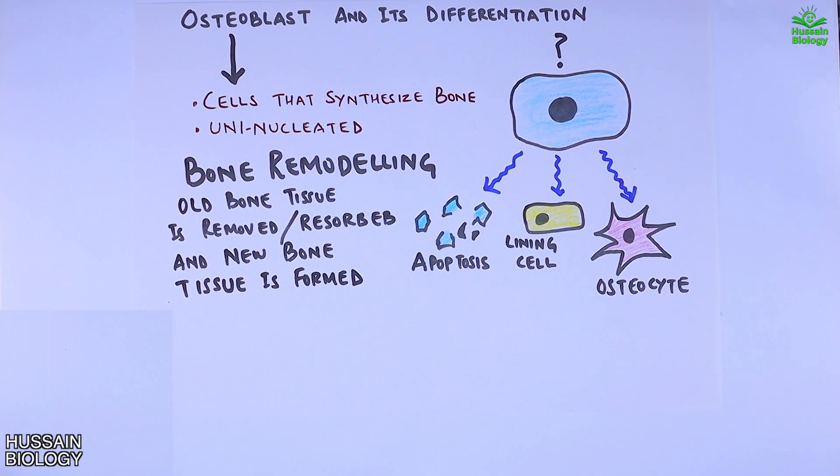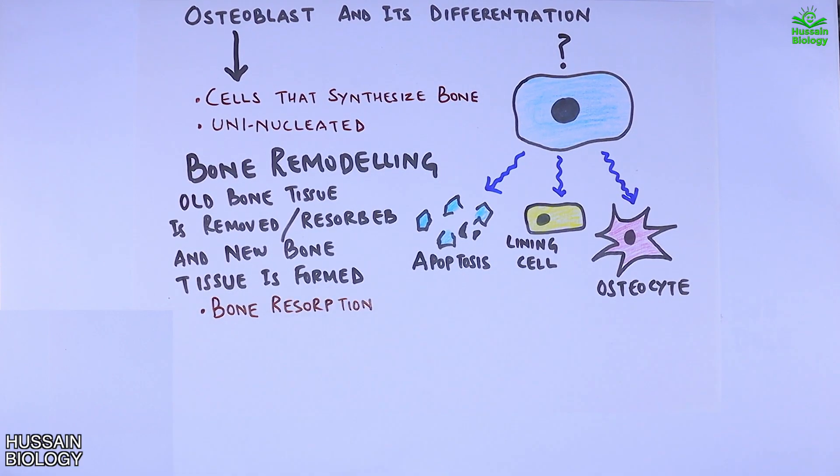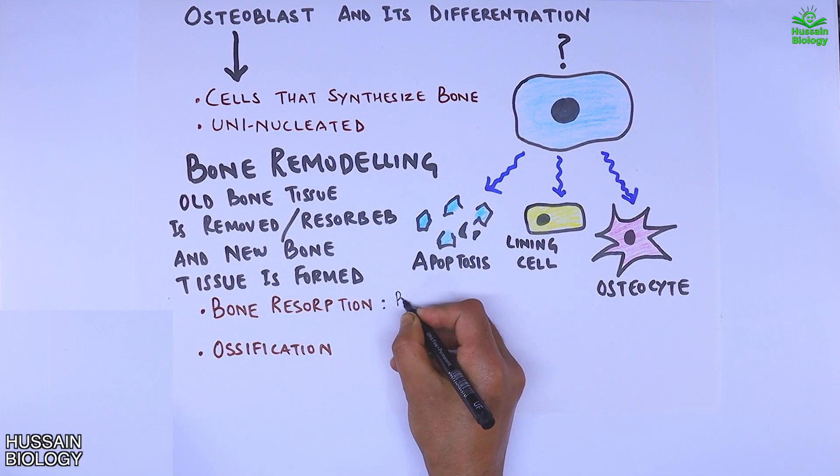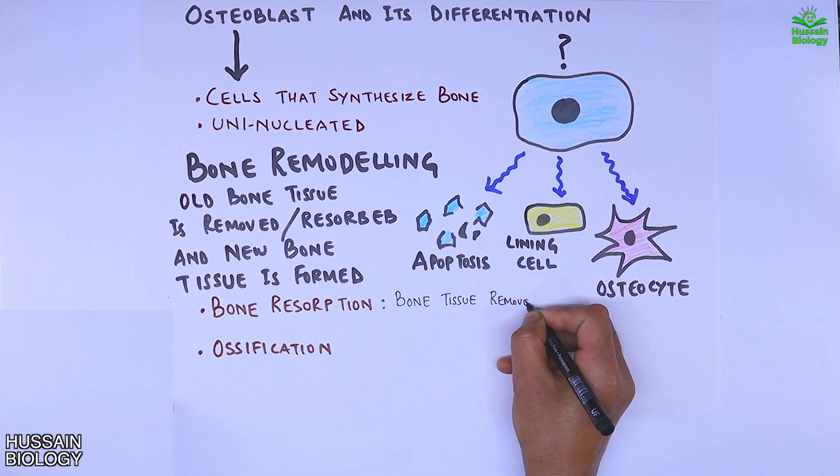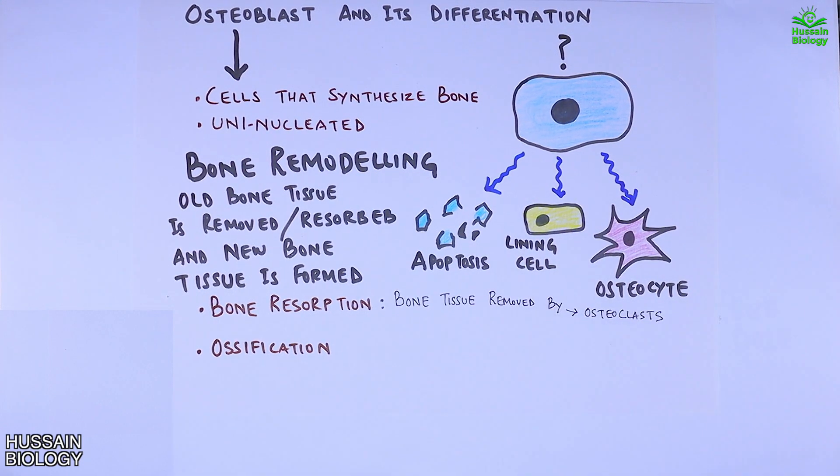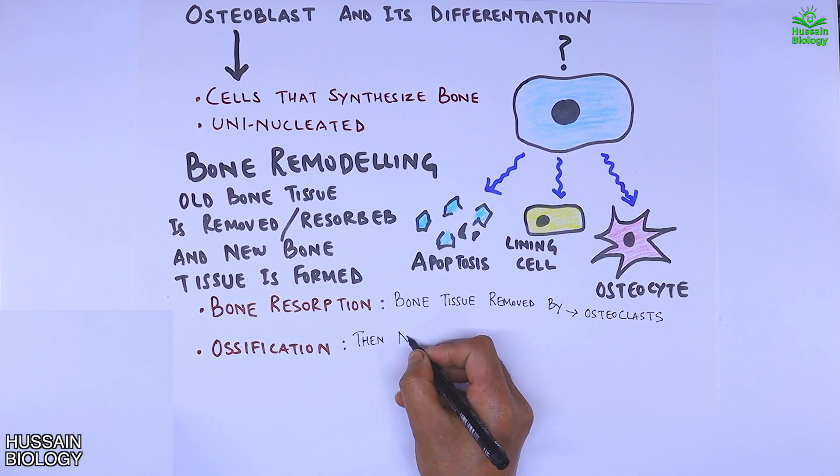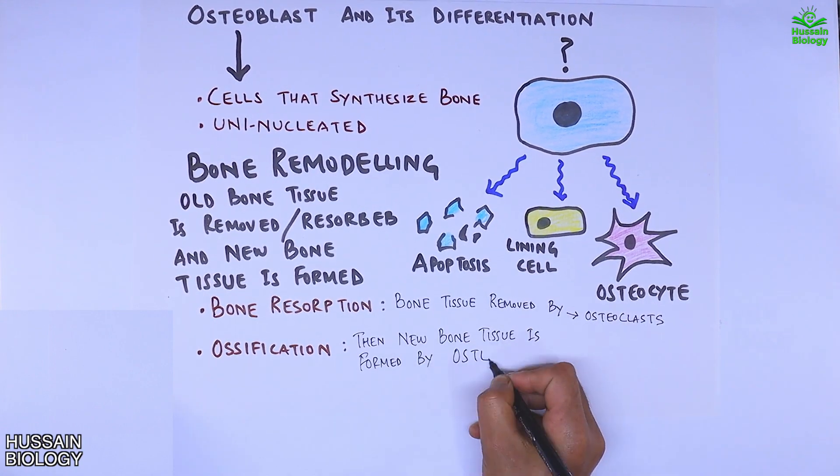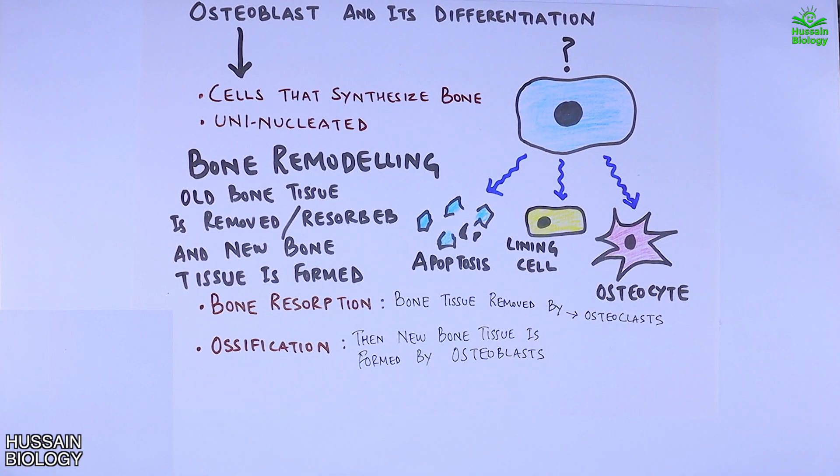We see here we have two terms: bone resorption and ossification. Bone resorption, where bone tissue is removed, is done by osteoclasts, whereas ossification is when new bone tissue is formed by osteoblasts. So there are two types of cells: osteoclasts and osteoblasts.